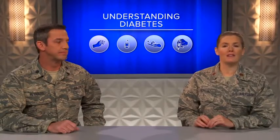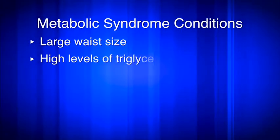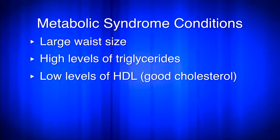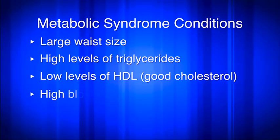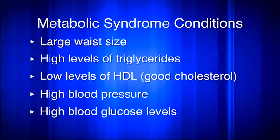Metabolic syndrome is a group of five health conditions that increase the risk for type 2 diabetes and heart disease. Generally, when a person has at least three of the five conditions, they are diagnosed with metabolic syndrome. These conditions include large waist size, high levels of triglycerides, low levels of HDL or good cholesterol, high blood pressure, and high blood glucose levels.